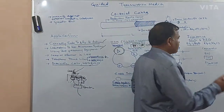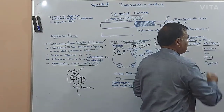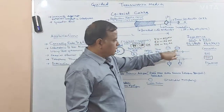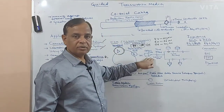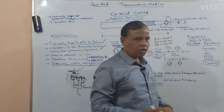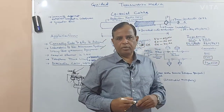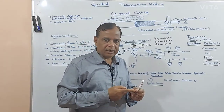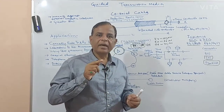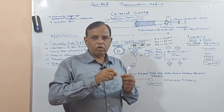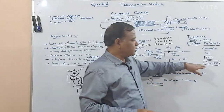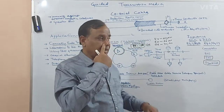The 75 ohm impedance cables like RG 6 or RG 59 are all familiar in the cable TV network. There you will be using F-type or UHF connectors — the center cable itself comes outside as the connector pin, and outside that the mesh is connected to the external body. That is the simple F-type connector popular in the cable TV network.